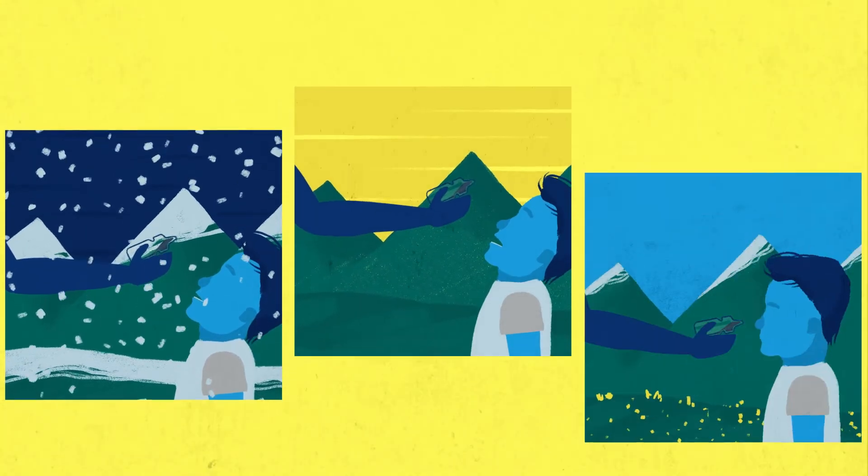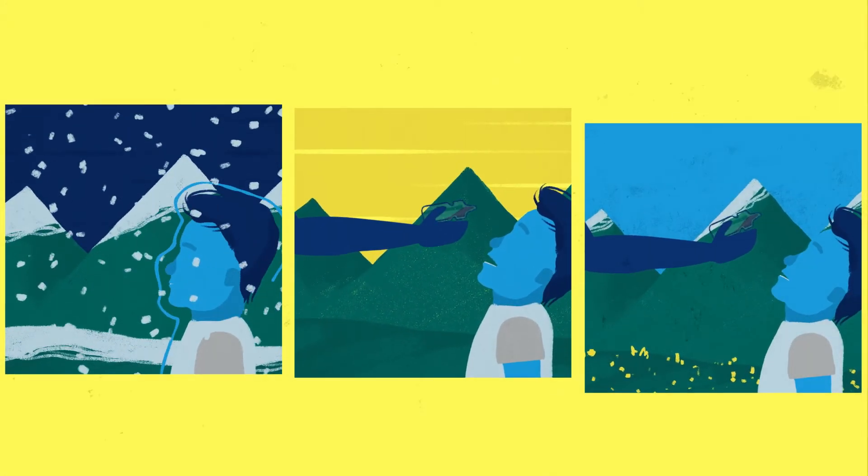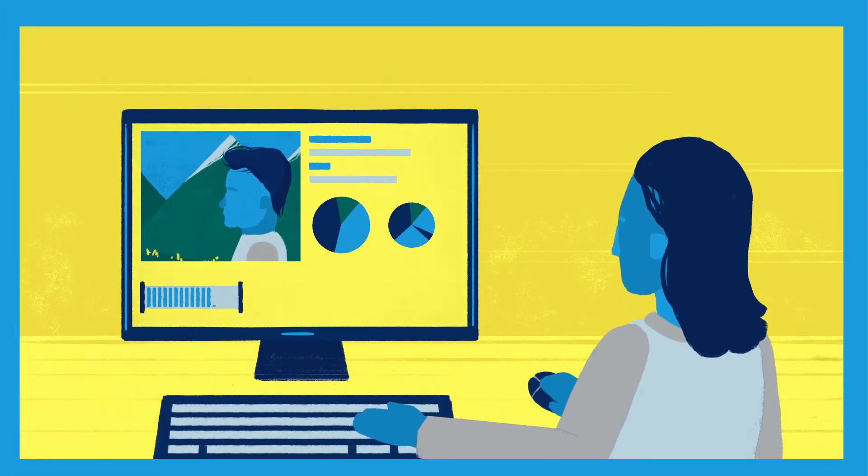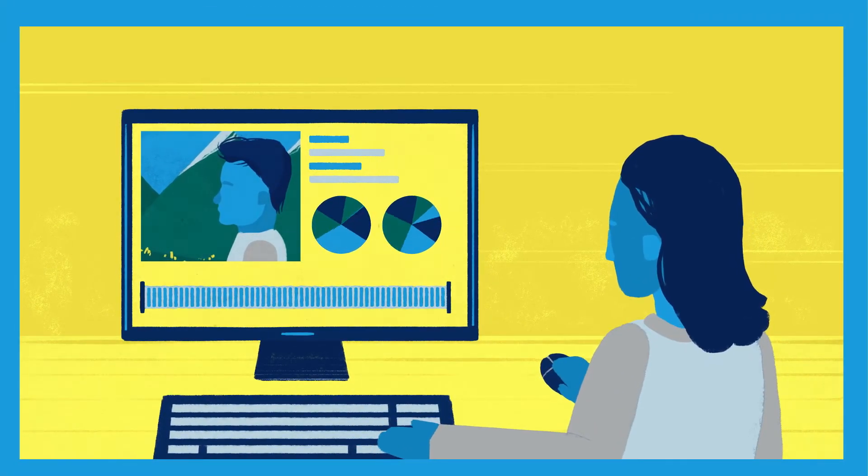For the virus to be stopped, at least three vaccination rounds are carried out. Every campaign is monitored to find where improvements are needed for next time.